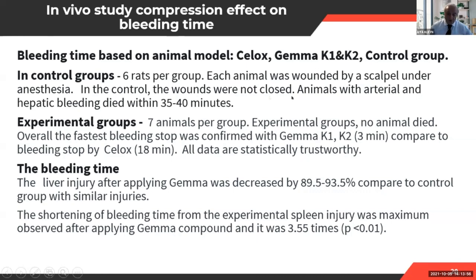Wounds were made, and unfortunately the control group did not survive — they died within 35 to 40 minutes. The experimental groups using Silux and Gamma K1 and K2 showed no animal deaths. Bleeding stopped overall, with K1 and K2 stopping bleeding within approximately three minutes compared to Silux at 18 minutes — you can calculate how many times faster our product works.